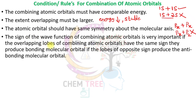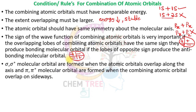The sign of the wave function of the combining atomic orbitals is very important. If the overlapping lobes of combining atomic orbitals have the same sign — plus-plus or minus-minus — they produce a bonding molecular orbital. If the lobes have opposite signs — plus-minus or minus-plus — they produce an anti-bonding molecular orbital. Sigma and sigma star molecular orbitals are formed when atomic orbitals overlap along the axis.